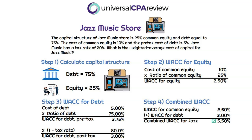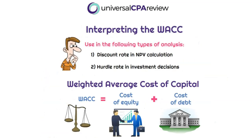That's not too bad. The last part is focused on how to interpret the WACC. It's mainly used to determine whether a company should invest in a project, a business, or other types of decisions. It's usually the discount rate in a net present value calculation, or the hurdle rate in an investment decision — those are the two most common uses.